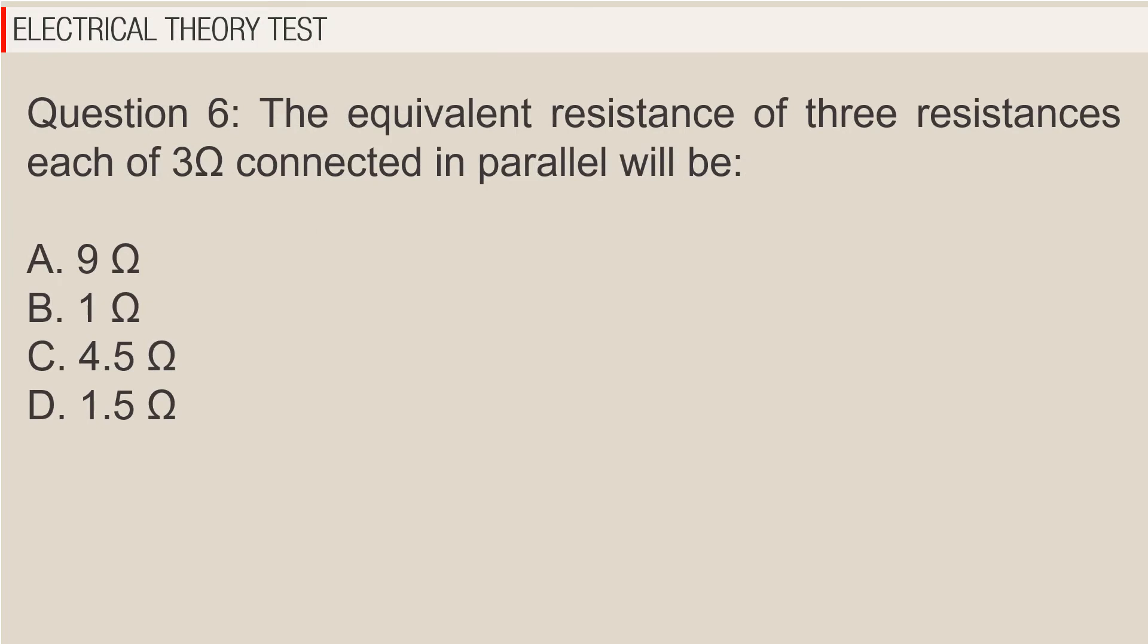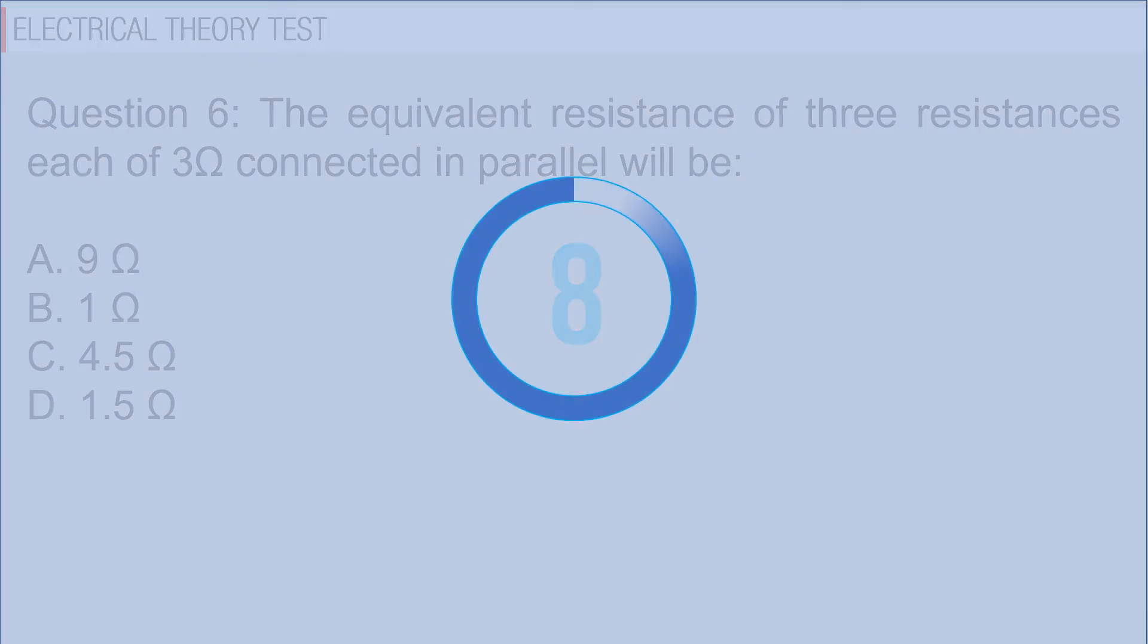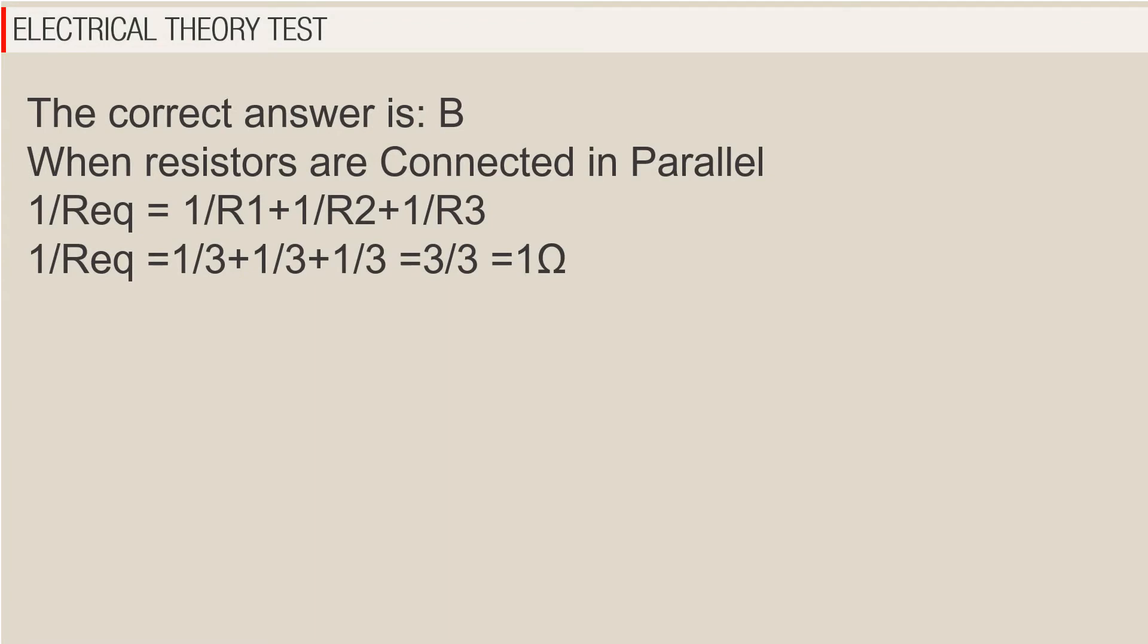Question 6: The equivalent resistance of three resistances each of three ohms connected in parallel will be A. 9 ohms, B. 1 ohm, C. 4.5 ohms, D. 1.5 ohms. The correct answer is B. When resistors are connected in parallel, 1 over R eq equals 1 over R1 plus 1 over R2 plus 1 over R3. 1 over R eq equals 1 third plus 1 third plus 1 third equals 3 thirds equals 1 ohm.